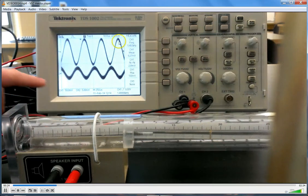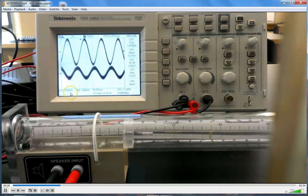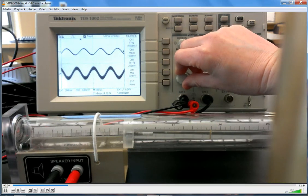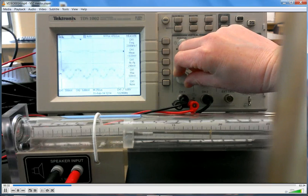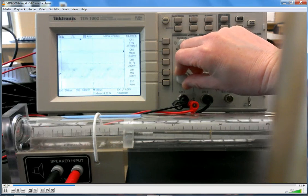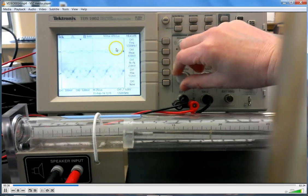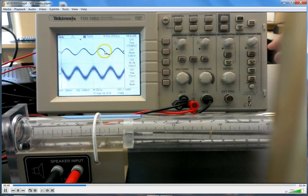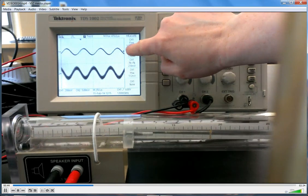The volts per division knob changes the height. When you're changing that knob, it's how many volts per division are displayed on the screen - you can make it zoom in or zoom out. If you go too small, what ends up happening is you might lose track of the signal. It'll start to get a little messy there.